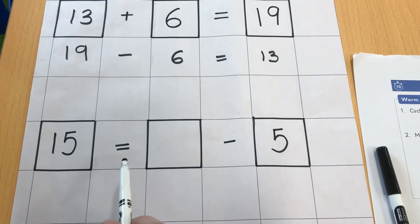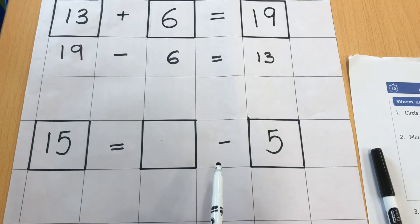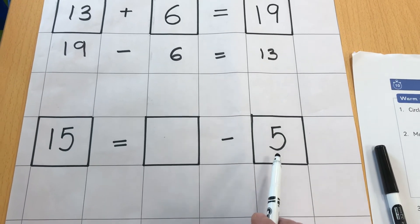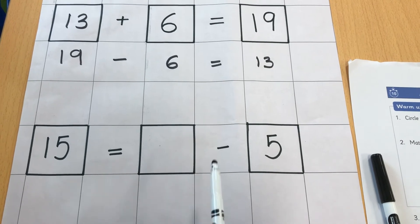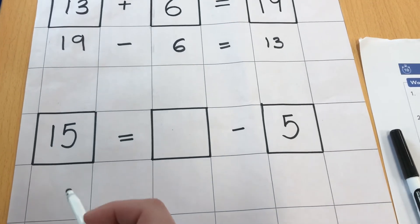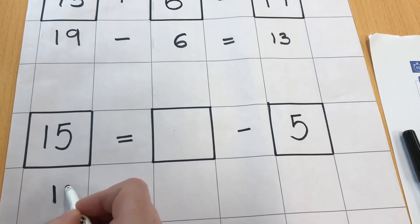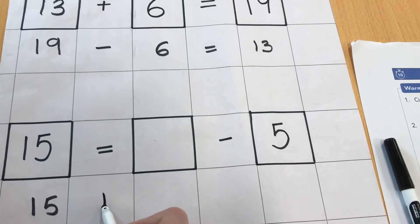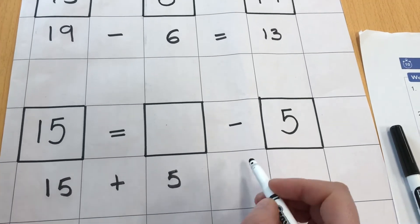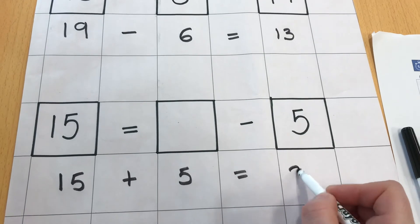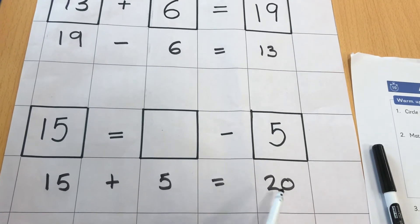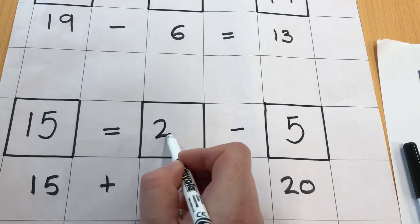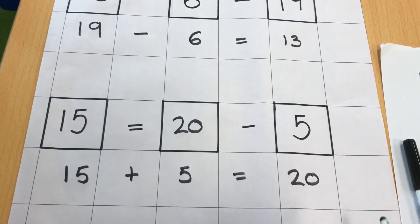15 is the same as something take away 5. Now this is a takeaway, so I'm going to turn it into an addition, the inverse. So I'm going to take my 15 and I'm going to add my 5. 15 add 5 makes 20. So if 15 add 5 makes 20, then 15 is the same as 20 take away 5.